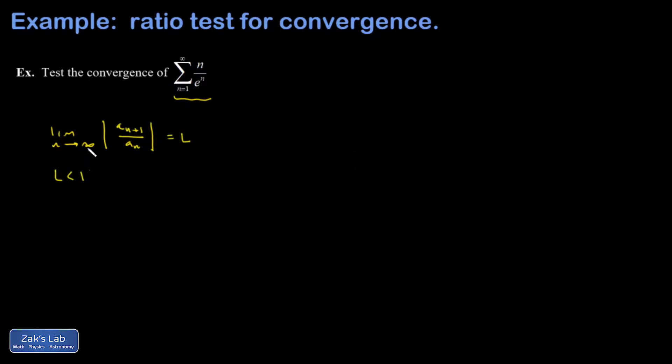If that limit turns out to be less than 1, you have convergence. If it turns out to be bigger than 1, you have divergence. If it's equal to 1, it's inconclusive.